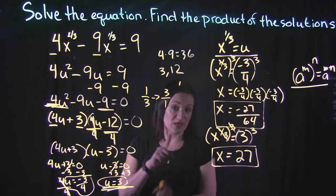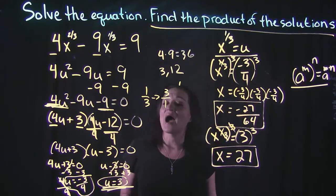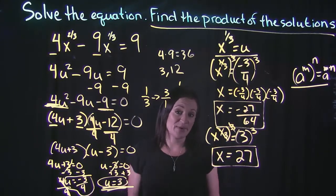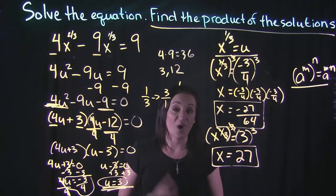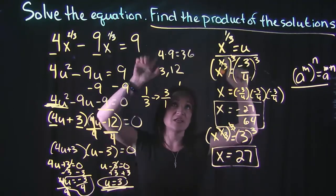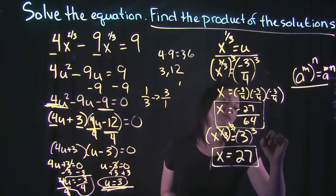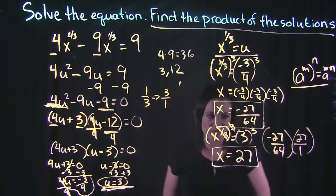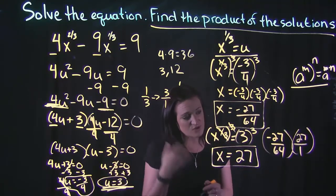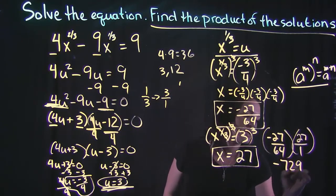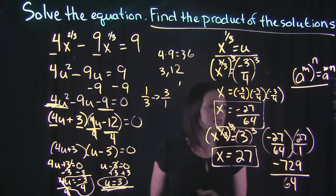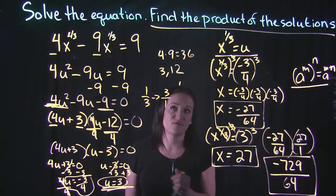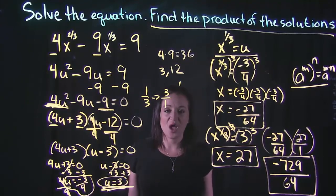Going back to the instructions, this problem said find the product of the solutions. If this were multiple choice, negative 27/64 and 27 would both be answer choices to throw you off — they want to make sure you're reading the instructions. The instructions say to find the product, so we multiply negative 27/64 by 27 over 1. Negative 27 times 27 is negative 729, and 64 times 1 is 64. So the final answer is negative 729 over 64.